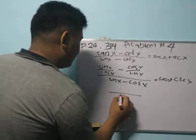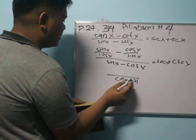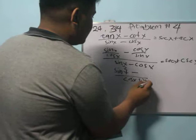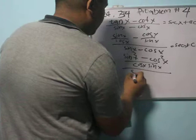the common denominator is cos x sin x. Sin x over cos x divided by cos x sin x equals sin squared x, minus cos x over sin x divided by cos x sin x equals cos squared x.